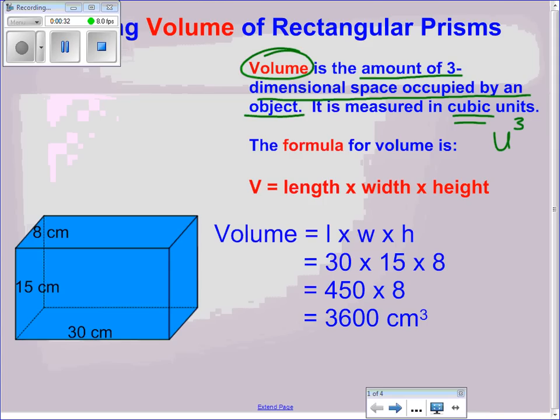Now the reason we use power of three is that we're talking about three dimensions. We're talking about length as one dimension, width as a second dimension, and height as a third dimension. So that's where we arrive at our units cubed.